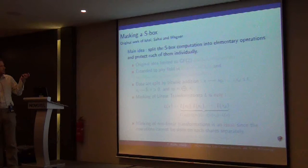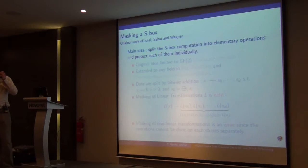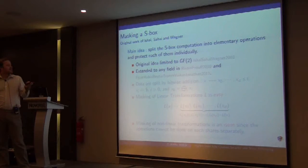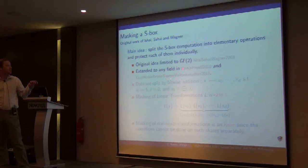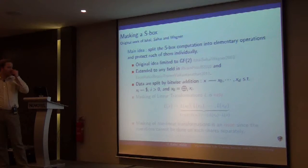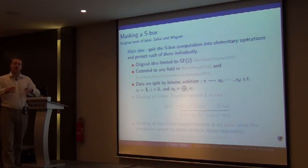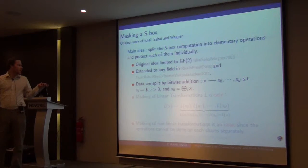How do we mask the S-boxes to the higher order? This original work from Ishai, Sahai and Wagner in 2003 at Crypto, and there was a main idea to write the S-boxes as a polynomial function, and so divide it into elementary operations in the field, like in F2 for the original paper, but it has been extended to any field, like Rivain-Prouff in 2010, and then process each of these S-box operations one after the other. The sharing that we use is bitwise addition, meaning that the shares of a variable X XOR-ed together gives the variable X, and each of them is independent of the secret.